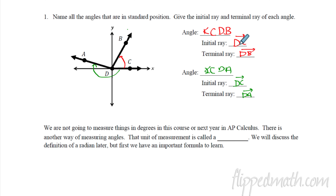Now we're going to change things up. In this course and in AP Calculus, you don't get degrees anymore. There's another way of measuring angles and that unit of measurement is called a radian. We're going to talk about the definition of the radian, but first we have an important formula to learn.